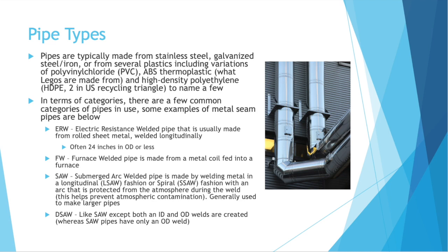Then you have DSAW pipe, which is just like SAW pipe except it is dual submerged arc welded, meaning there are two welds — on the ID, inner diameter, and the OD, outer diameter — so submerged welding on both the inside and outside of the pipe.